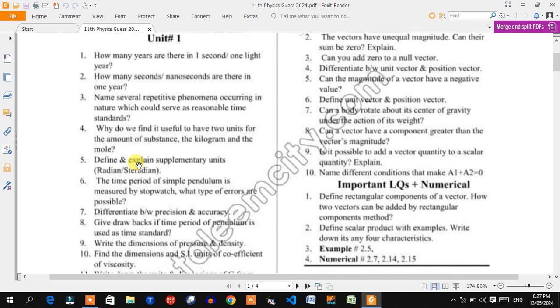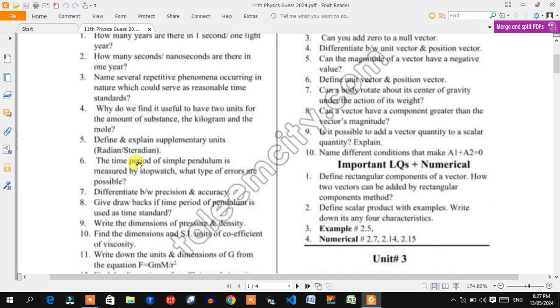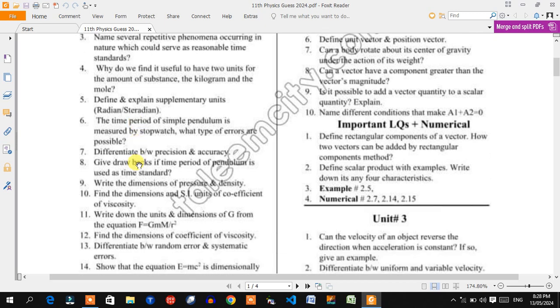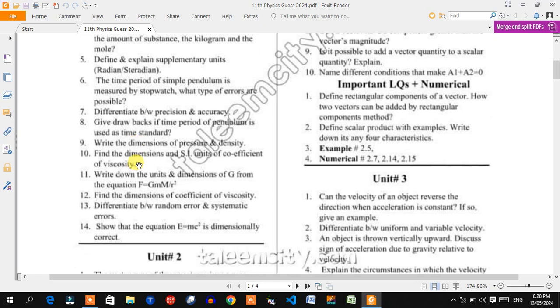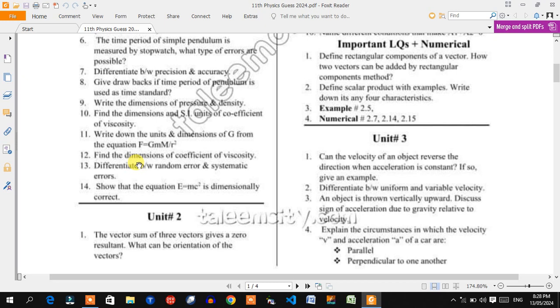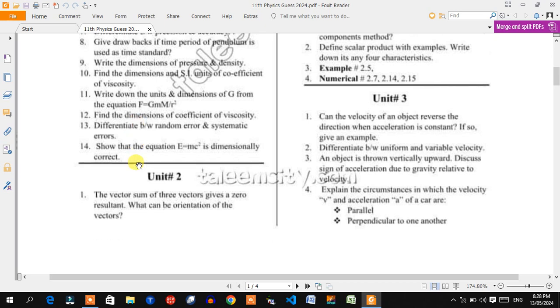Students, you'll find defined and explained supplementary units, meridian and radian. Same period by definition, difference between precision and accuracy. How many dimensions of pressure and density? Formula F is equal to GMm/r squared. How many dimensions to find for G? How to define random error and systematic error?